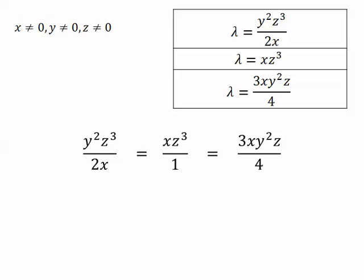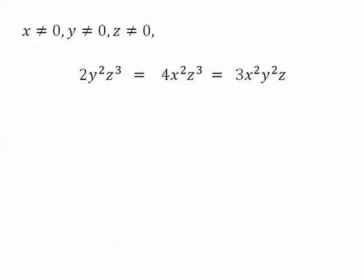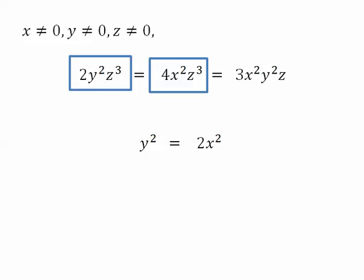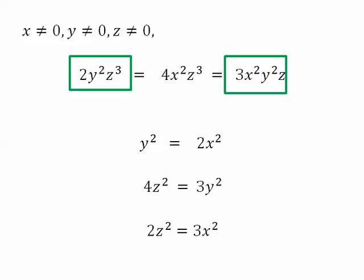I'm not a big fan of fractions, so I'm going to multiply through by 4x. After I multiply through by 4x, I just look at what I have and start making comparisons. I'm going to compare the first one with the second one. When I do that, I see that it has to be true that y squared equals 2x squared. Likewise, 4z squared has to be equal to 3y squared. And 2z squared has to equal 3x squared.